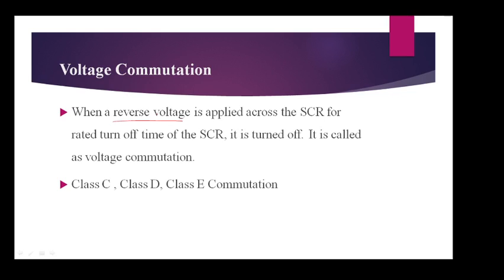Reverse voltage means negative is applied to the anode and positive is applied to the cathode, for a time equal to the turn-off time of the SCR. This turn-off time is given in the SCR datasheet. Class C, class D, and class E commutation are types of voltage commutation. In some books, type C, type D, and type E is given.